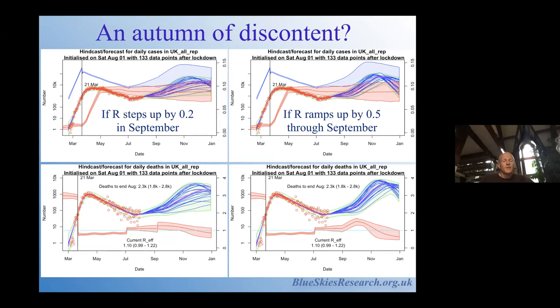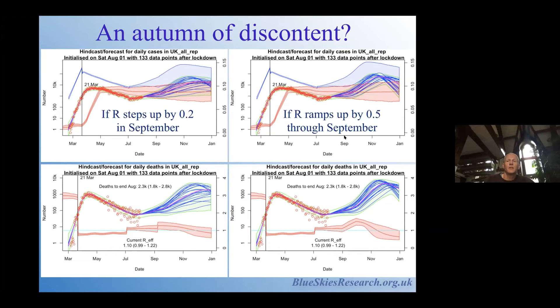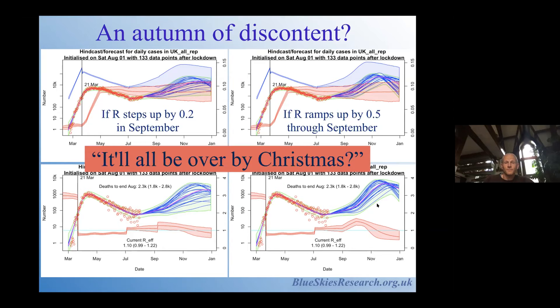Just a few illustrations of what might happen over the autumn: as people start to go back to school in September, R might ramp up or jump up, and if it does, we're going to get a second epidemic which might well be worse than the first. Boris Johnson said it will all be over by Christmas, but I'm not sure he meant it quite in this way. The summary: don't be afraid to step out of your lane if you think you can make a contribution in a new field, but don't expect any thanks. A well-calibrated simple model is better than an uncalibrated complex one. There are three places you can read more: a MedRxiv manuscript, a paper just published on the economic analysis of lockdown timing implications, and the House of Lords Science and Technology Committee evidence.